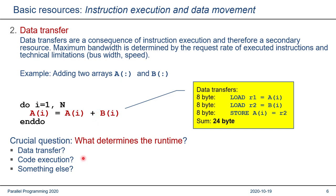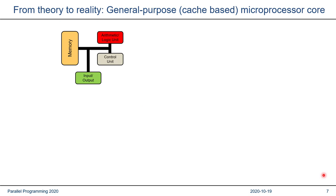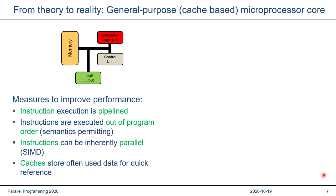We want our general purpose computer to execute programs as fast as possible. Typical measures that computer architects employ to improve performance include: first, pipelined instruction execution, which means each instruction is split into smaller parts that can be executed in parallel. Instructions can also be executed in a different order than that in which they appear in the program — this is called out-of-order execution, and the semantics of the program is preserved. Instructions themselves can be inherently parallel, working on several data items at once — this is called single instruction, multiple data, or SIMD. Finally, caches are used to store frequently used data for quick reference.